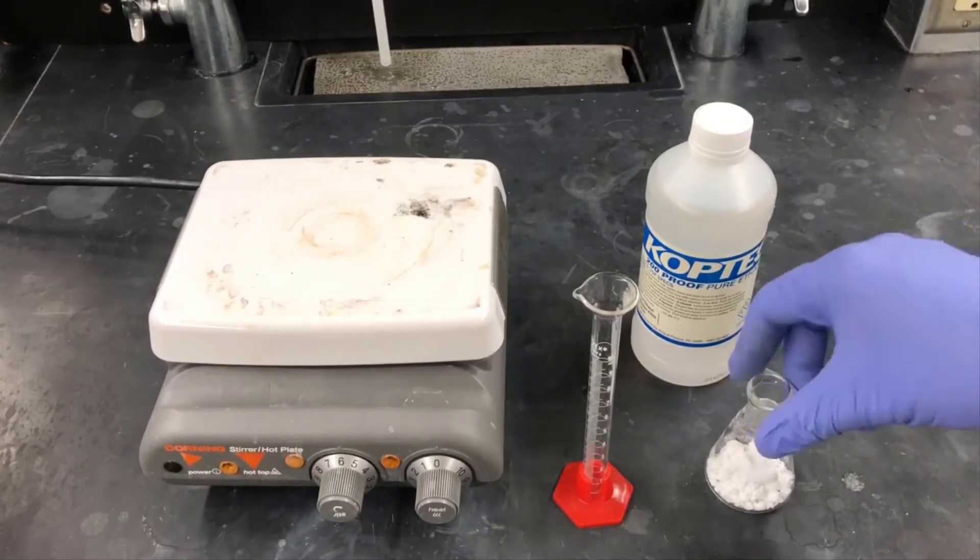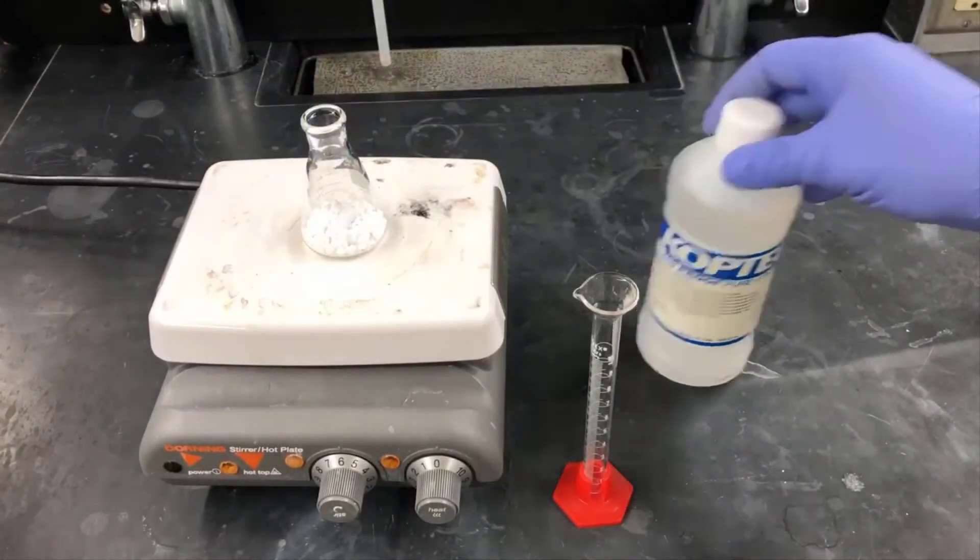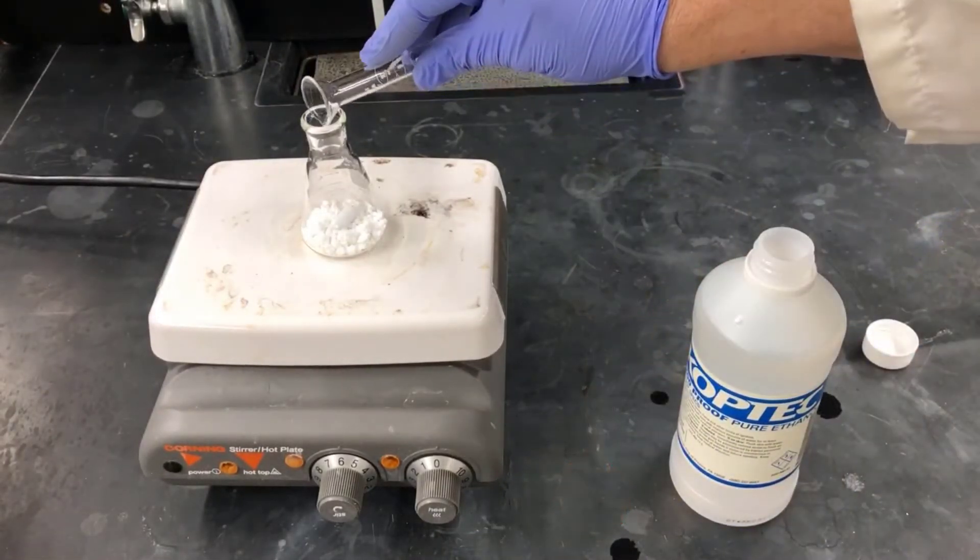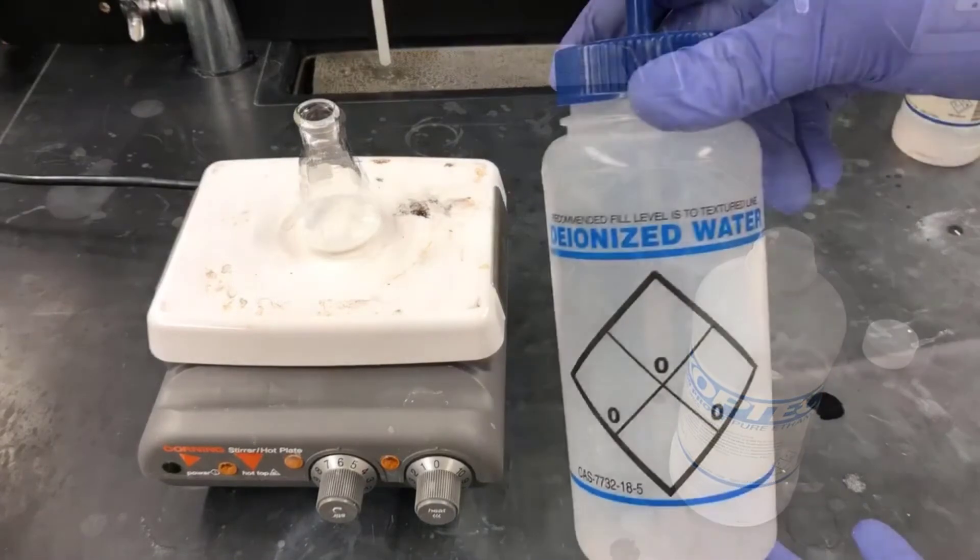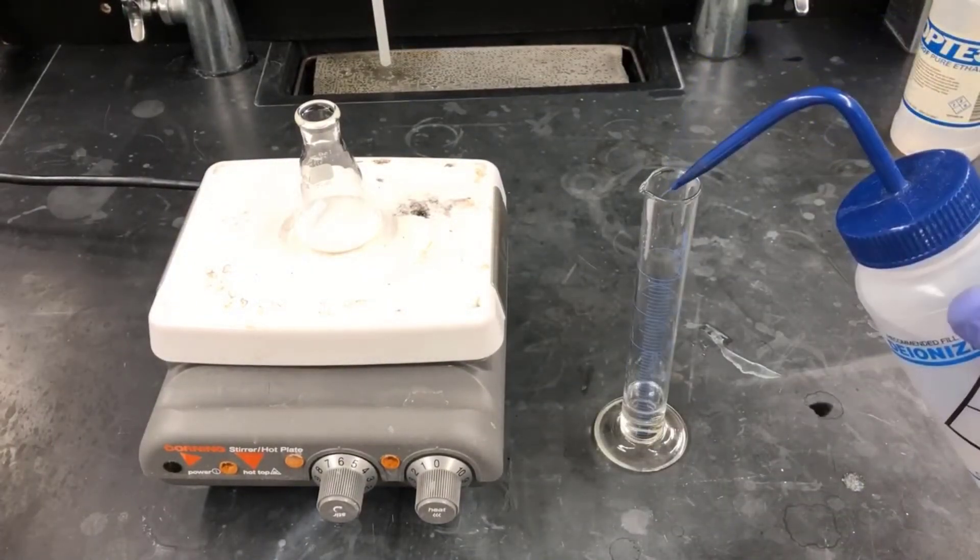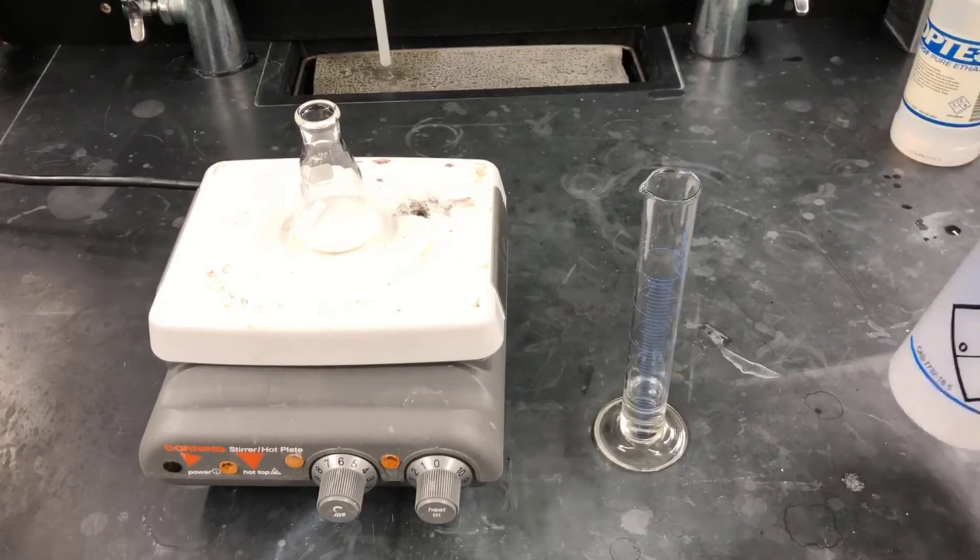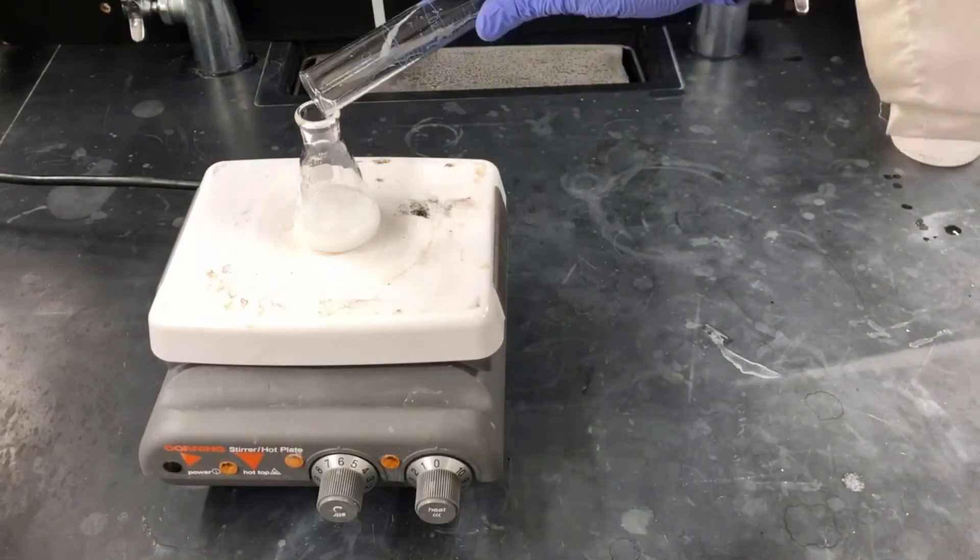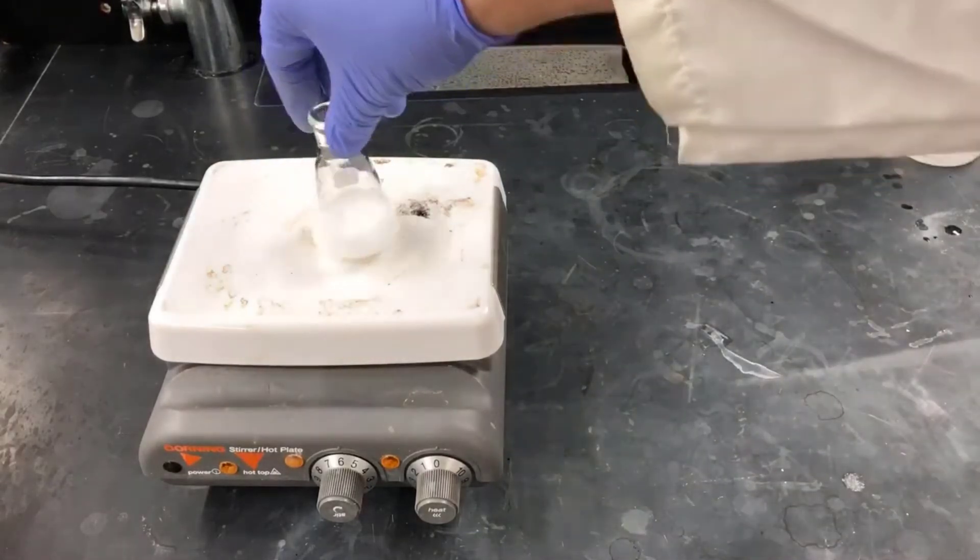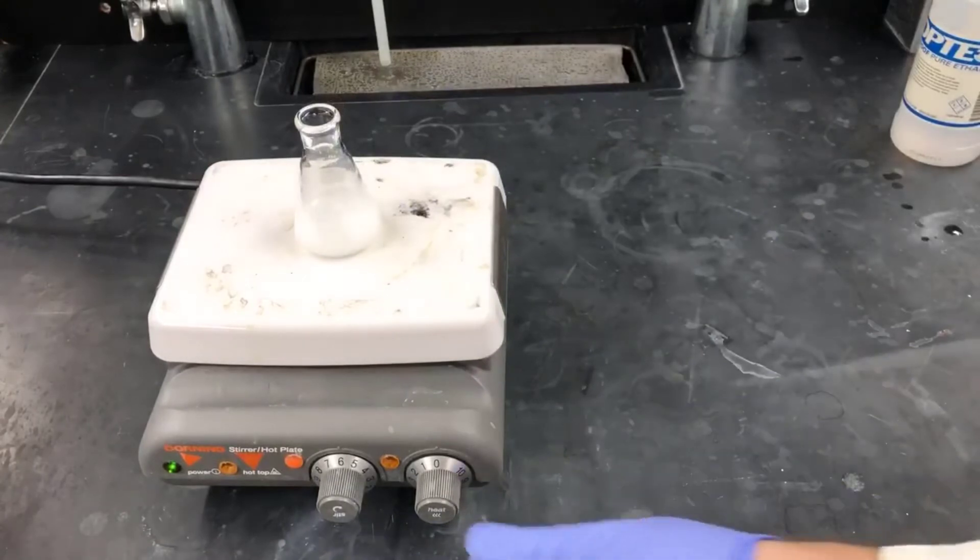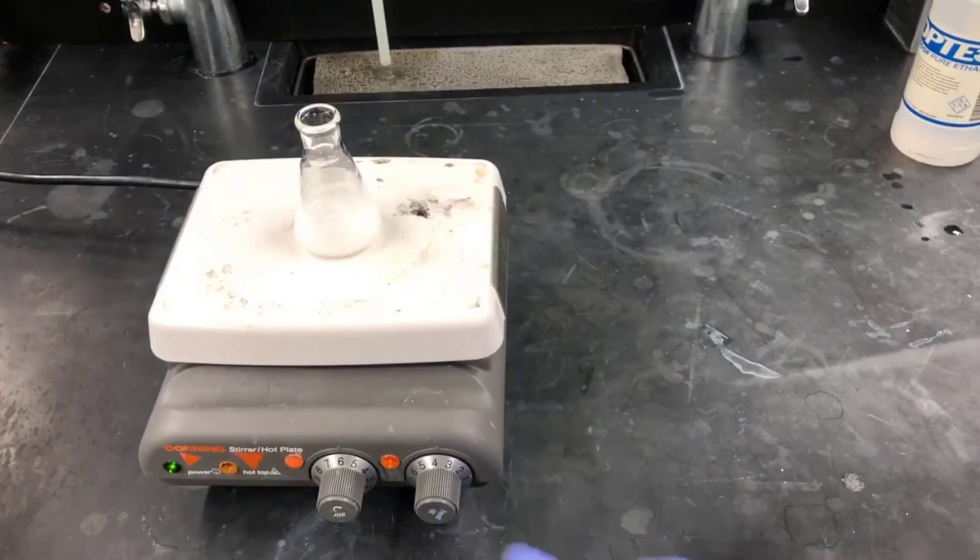I'll add a stir bar to the Erlenmeyer flask, and then I'll add four milliliters of ethanol, which is the good solvent for aspirin. Next, I'll add 12 milliliters of deionized water. This is the poor solvent for aspirin. The solvent's cold at this point, and the solid is not dissolved in it. However, when I heat it up, it'll become more soluble at higher temperature, and all the solids should dissolve.